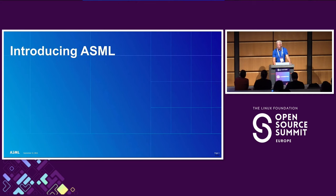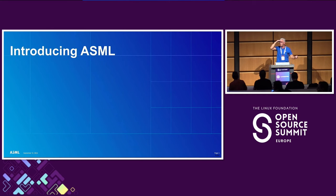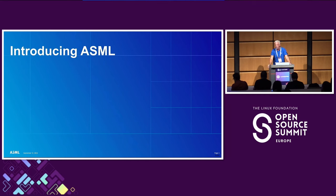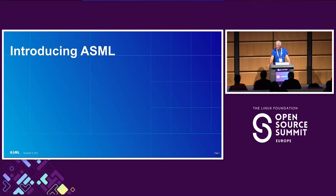So introducing ASML — maybe a show of hands: who knows ASML or who doesn't? ASML is basically the chip-making equipment company. We provide our lithography technology solutions to the big chip-making companies like Intel, Samsung, Micron, TSMC, NVIDIA, and others. Our equipment is used to create chips — that's our core business — and we are the top high-tech company in Europe, with a global presence.